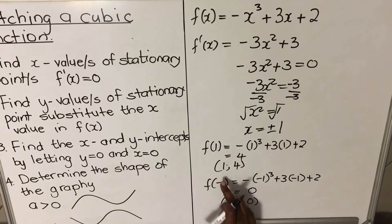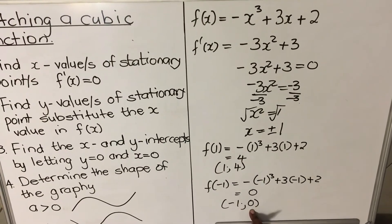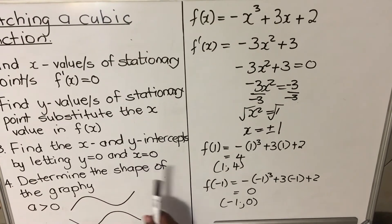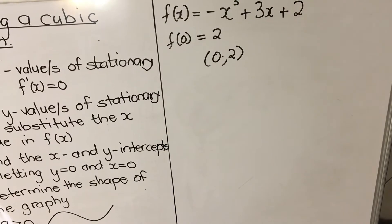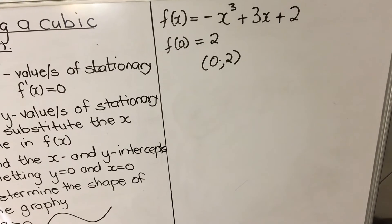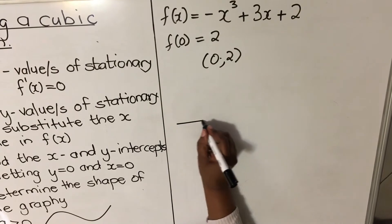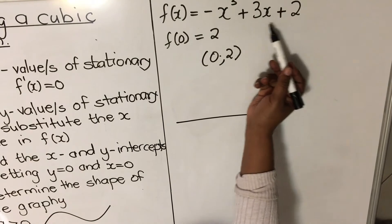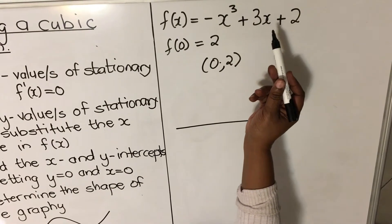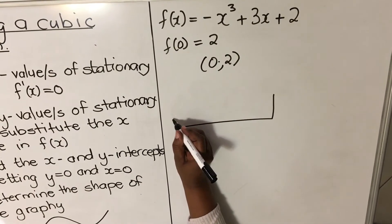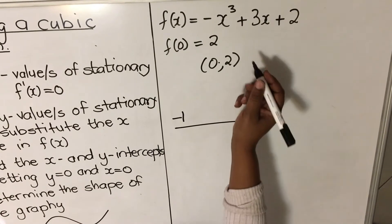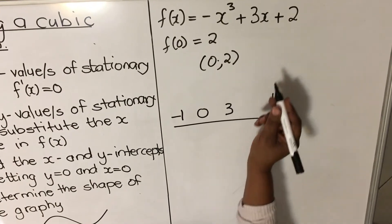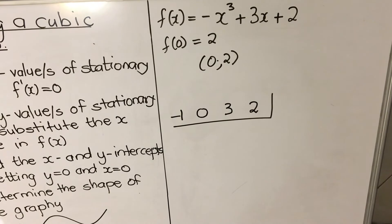Now we find the x and y-intercepts. To find the x-intercept, use synthetic division. Write each coefficient: since we don't have an x² term, substitute 0 for it. The coefficients are -1, 0, 3, 2. Use your calculator to find a factor — try x = 1 first; if it doesn't give zero, try x = -1.